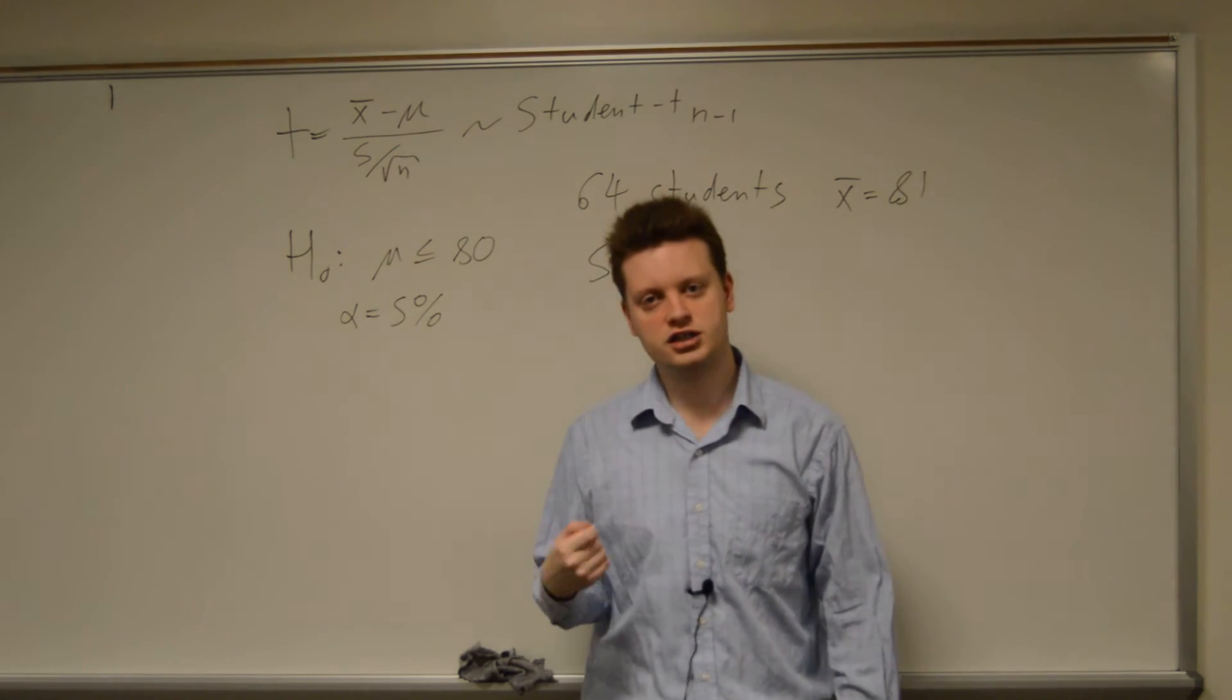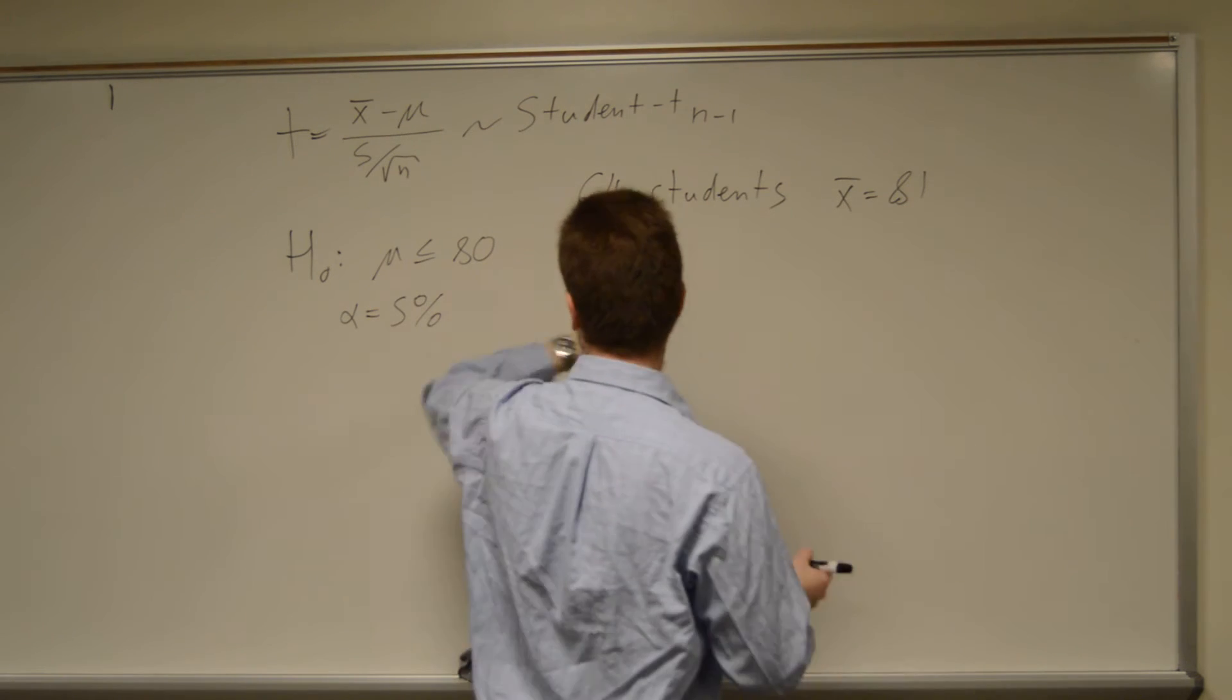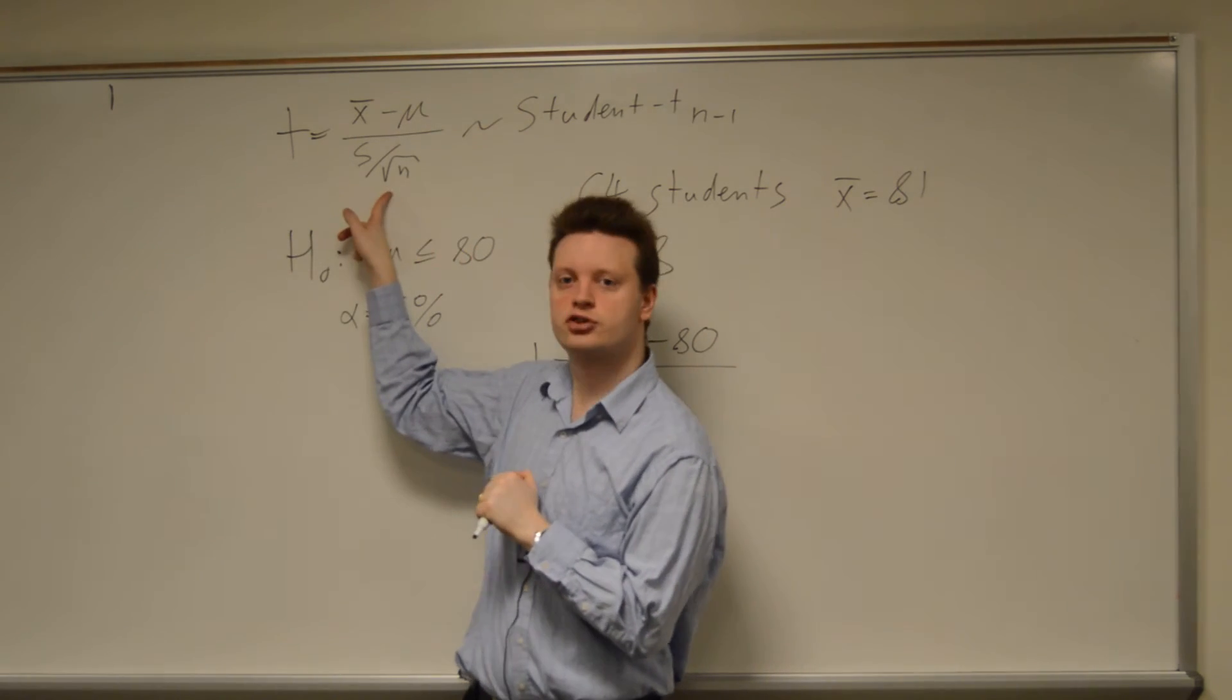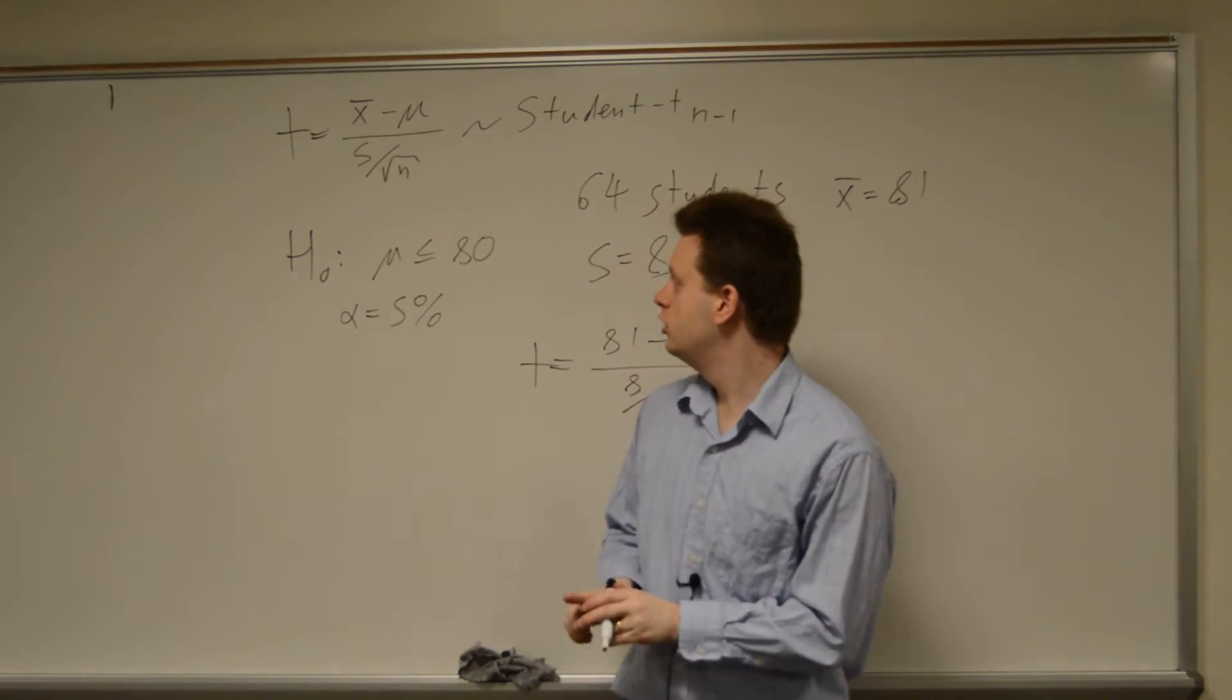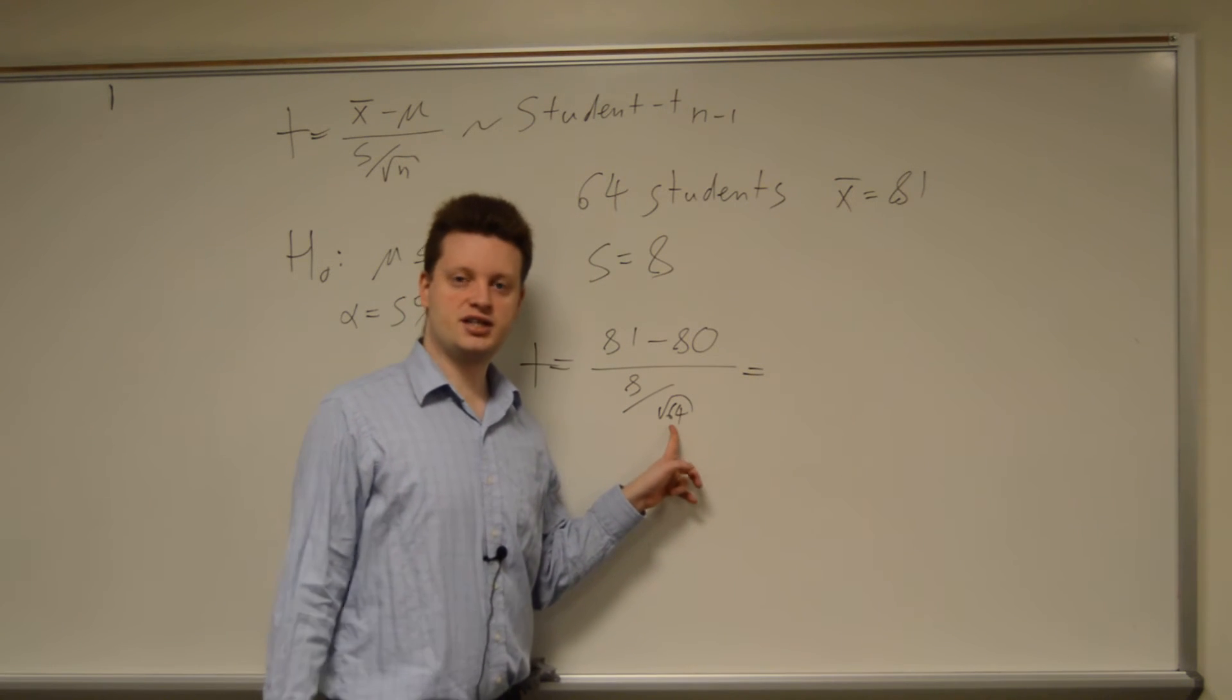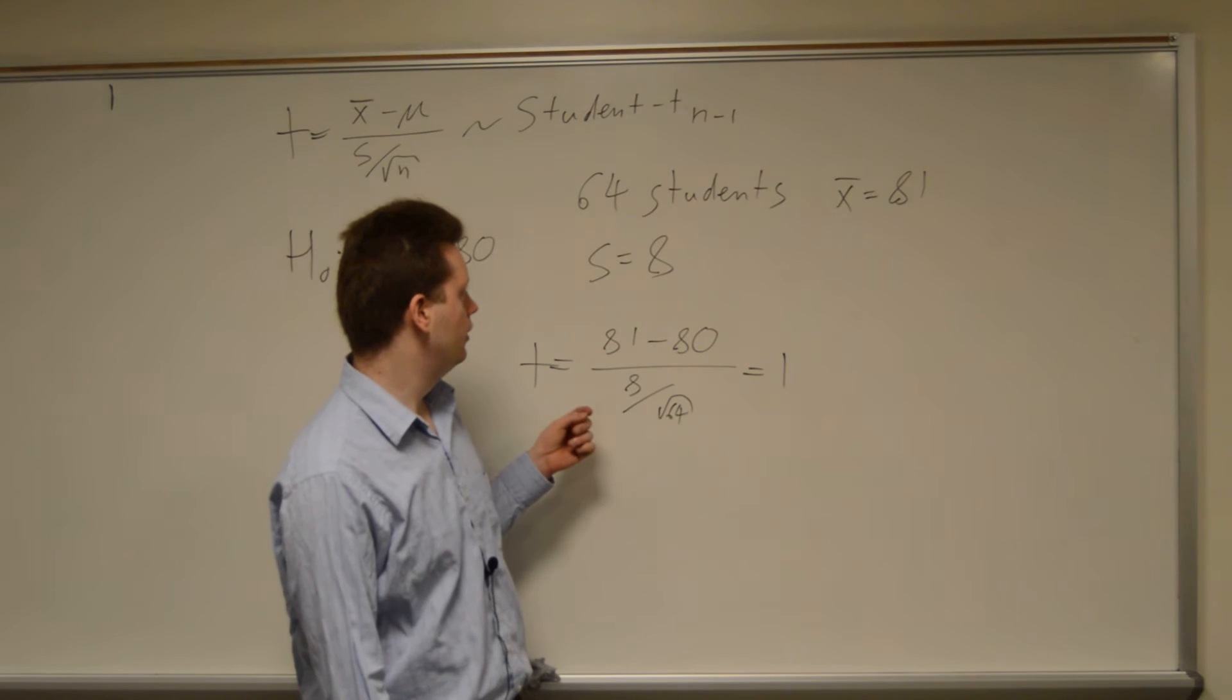So let's calculate our t-statistic. Our t-statistic is equal to x bar minus mu, 81 minus 80, over s over square root of n. And s is 8 over square root of 64. Well, square root of 64 is 8, 8 over 8 is 1, on top we have 1, so we end up with 1.